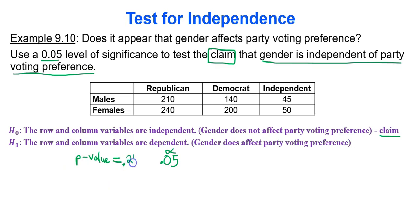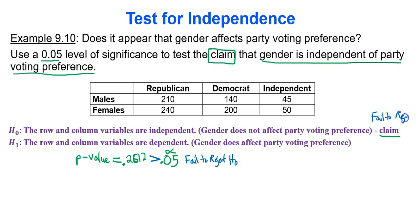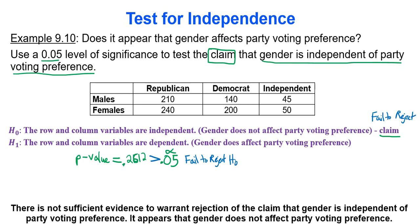The p-value of 0.2612 is definitely greater than alpha, so we are not under the limbo bar — we fail to reject the null. We fail to reject our claim. There is not sufficient evidence to warrant rejection of the claim that gender is independent of party voting preference. It does appear that gender does not affect party voting preference.